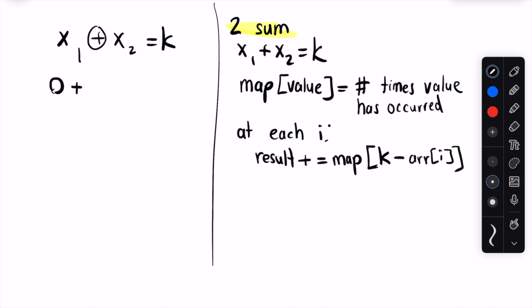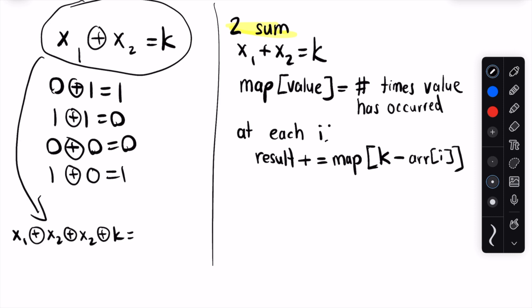In case you're not familiar, 0 xor 1 is 1, 1 xor 1 is 0, 0 xor 0 is 0, and 1 xor 0 is also 1. So if x1 xor x2 is equal to k, then we can actually xor both sides of this equation by k and x2 to derive the following. x1 xor k is equal to x2.